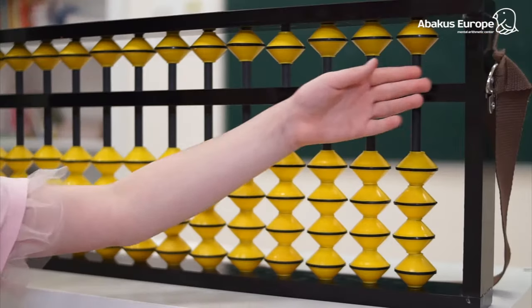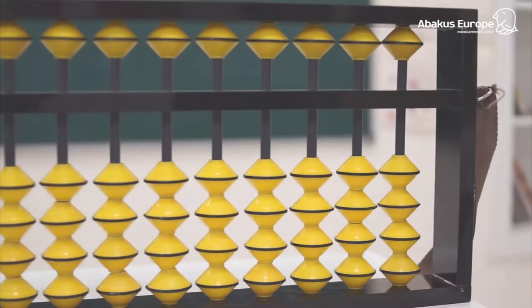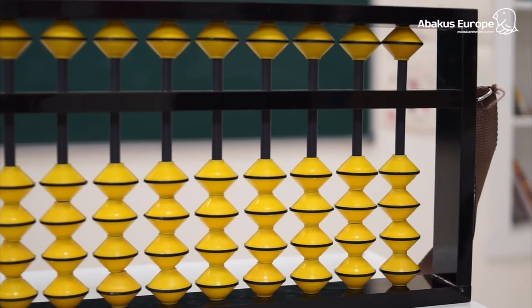Before studying arithmetic operations, we will get acquainted with the numbers on the abacus. There is a beam on the abacus which helps us determine what number is registered. If there is no bead touching the beam, then the number on the abacus is zero.